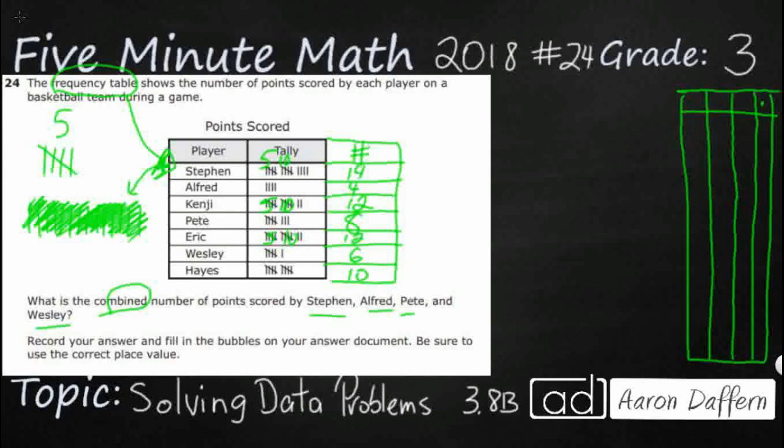We need Stephen, Alfred, Pete, and Wesley, and we're just going to turn this into a long addition problem because we are combining them. And when we combine, we are using addition. So Stephen has got fourteen. Let's make sure we line them up correctly. Alfred has got four, Pete eight, and Wesley has got six. So we didn't need all of these numbers, but we needed four of them. And whenever I'm adding big chunks like this, I'm always trying to find tens.